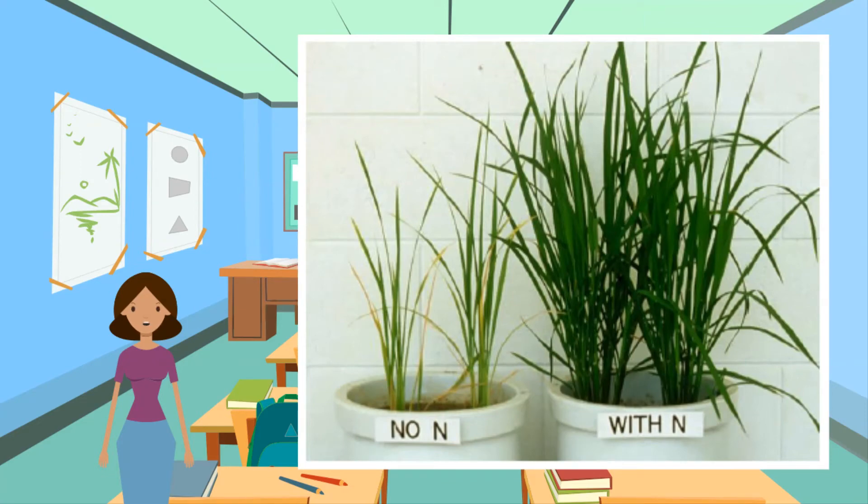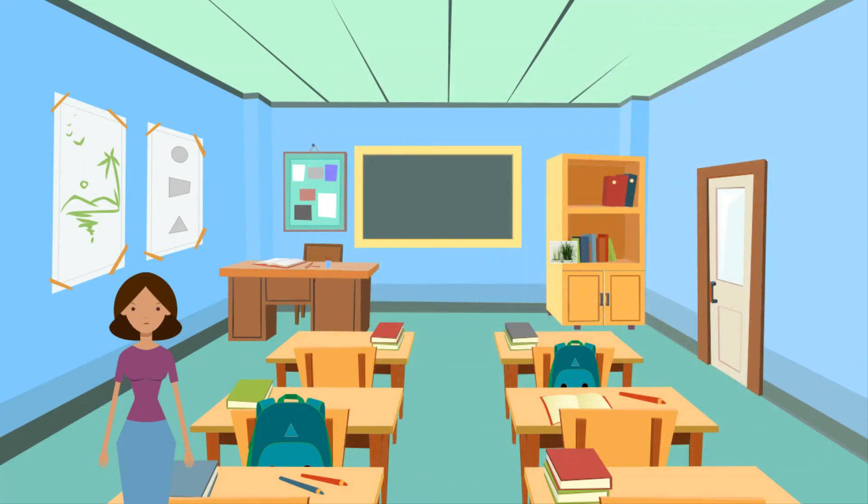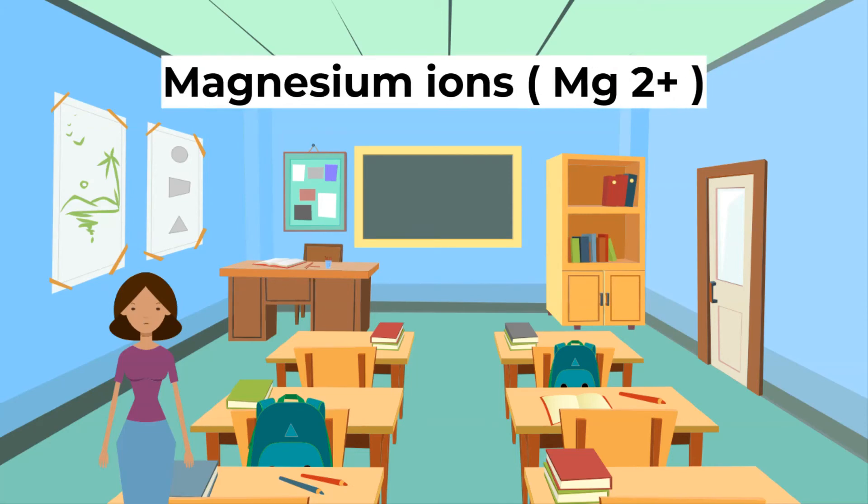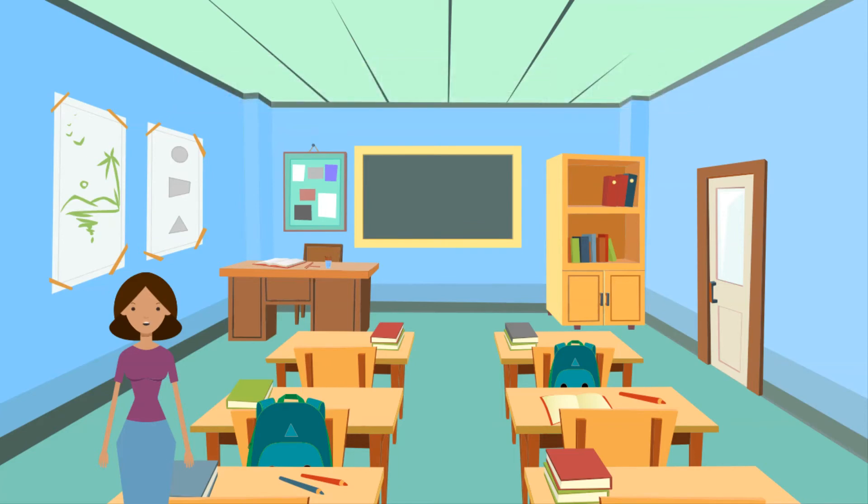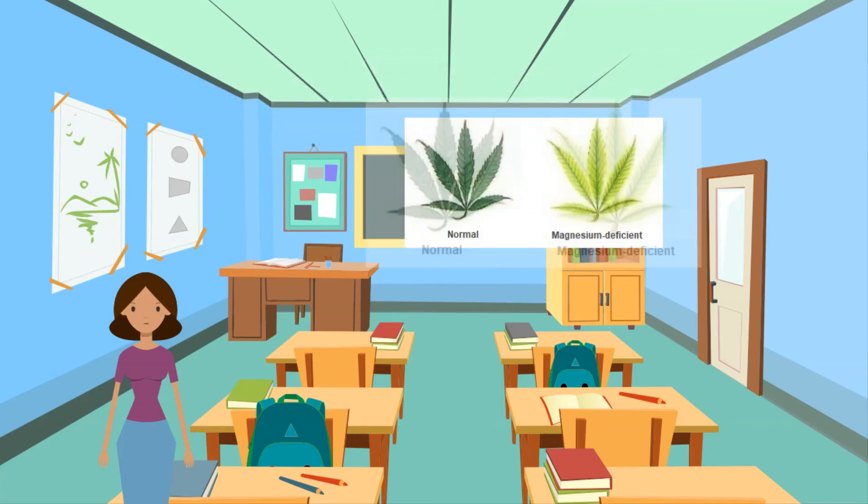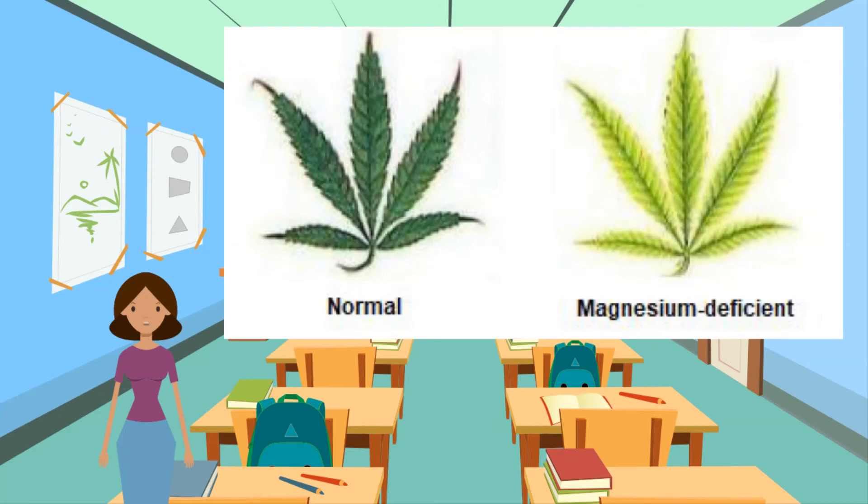Nitrate deficiency will cause the plant to suffer from slow growth and abnormal growth. Next, magnesium ions. Magnesium ions are used to make chlorophyll, and chlorophyll is essential for photosynthesis. Chlorophyll molecules contain magnesium, so without magnesium they cannot be made. Magnesium ions are also dissolved in water and are absorbed from the soil by the roots. Magnesium deficiency will cause the plant to turn yellow due to the lack of green chlorophylls.